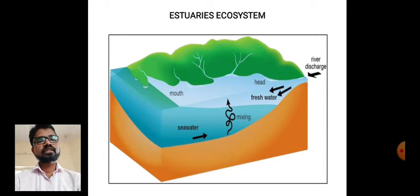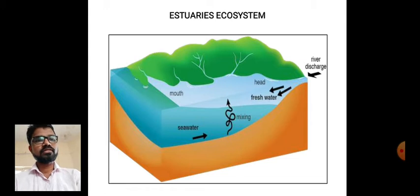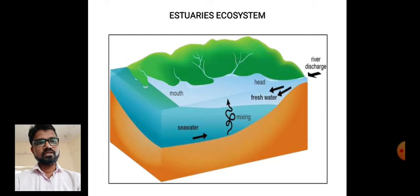An estuary is the place where fresh water and marine water meet — where fresh water and marine water mix with each other. We can see a diagram showing fresh water habitat and sea water habitat where the two types of water mix together. The place where they mix is called the estuaries ecosystem.